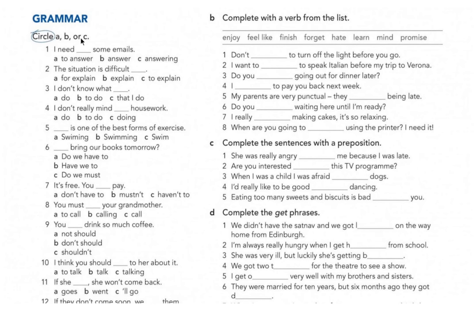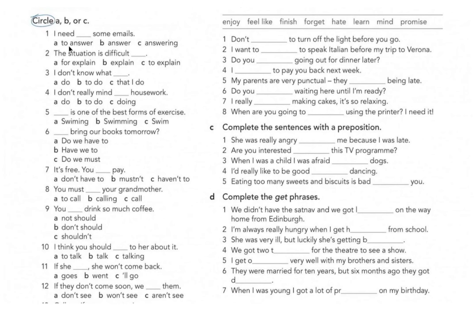We need to circle A, B, or C — multiple choice questions. Question one: 'I need some emails.' After the verb 'need', if you want to use another verb, the second verb has to take the 'to + infinitive' form. So the answer is A.